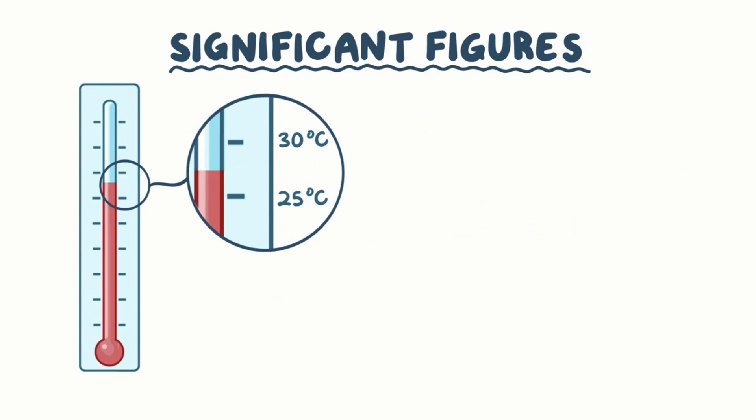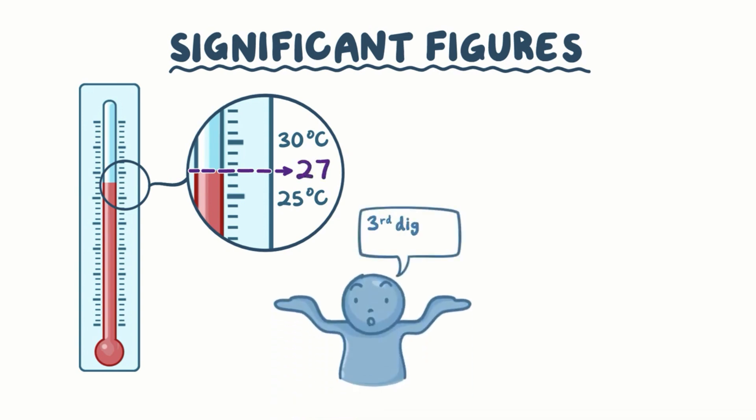Now let's look at a different thermometer, which has markings of 1 degree Celsius. So this time, the measurement is between the markings for 26 and 27 degrees Celsius. So you don't have to guess on the second digit, you know that it's 27, but you have to guess on the third digit, which looks like it might be 27.2 degrees Celsius. In this case, the uncertain digit is the last two, but all three digits are considered significant figures for this measurement.